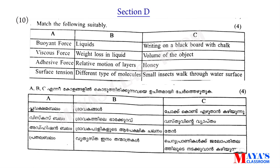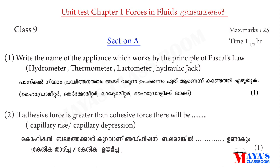Column B includes: liquid, weight loss in liquid, relative motion of layers, different types of molecules, use of blackboard with chalk, volume of an object in honey, and small insects walking on a water surface. Match column A to column B correctly.